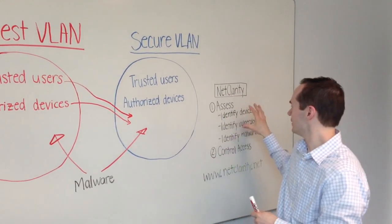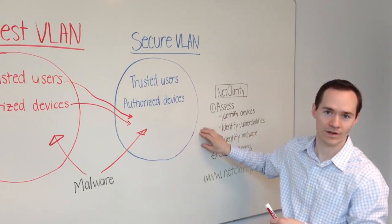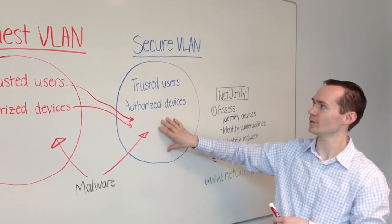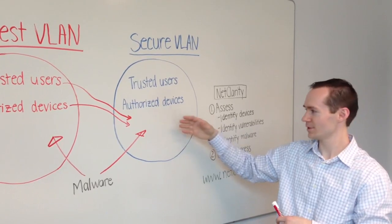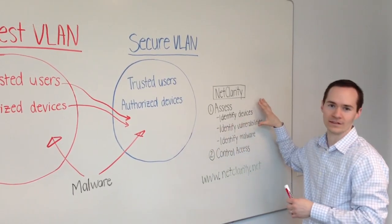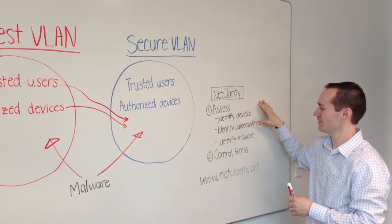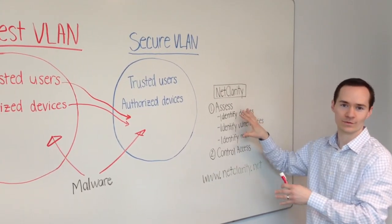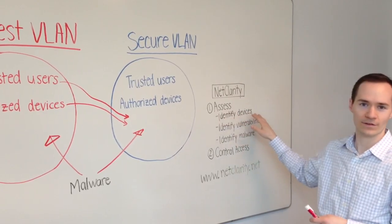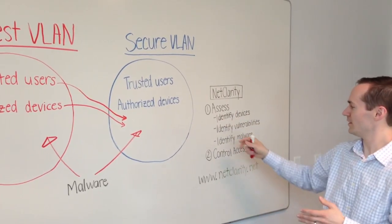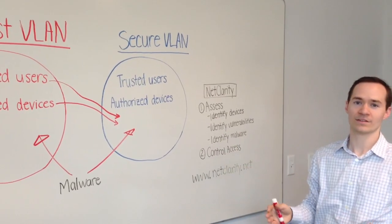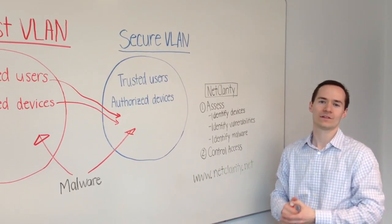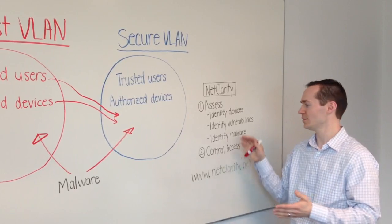So what we've done is created a solution with our security appliance to help address this very problem — to keep your secure network secure. We do two things: first, we assess; second, we control devices that are on your network. Under the assessment phase, we'll identify all the devices and the vulnerabilities that are present on those devices. We run several scans and synchronize with the National Vulnerability Database to do this.